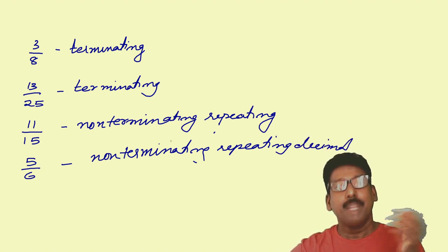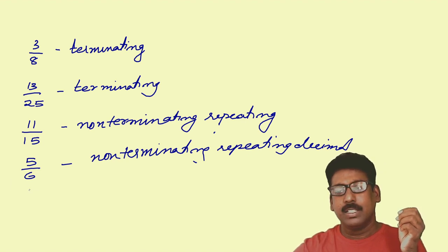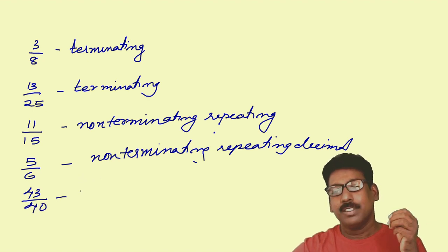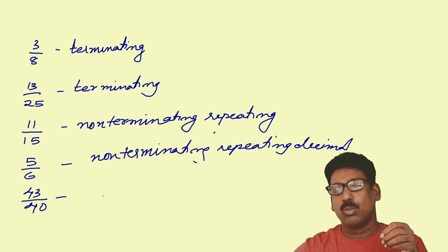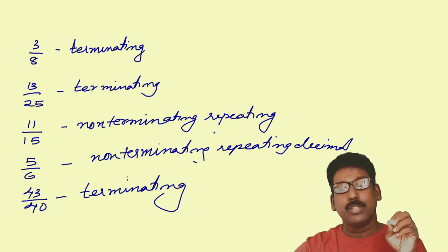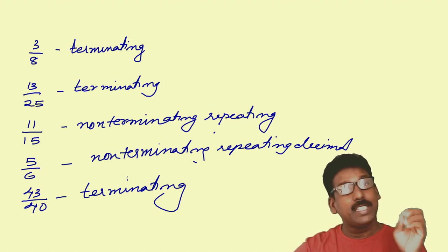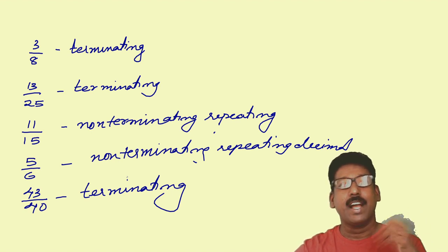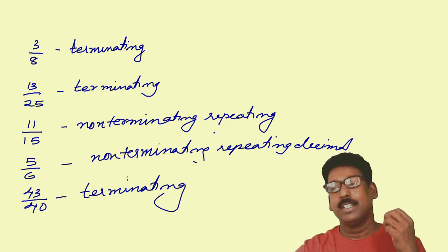Let me take one more example: 43 by 40. What about this? This rational number also has terminating decimal expansion. So 3 by 8, 13 by 25, and 43 by 40 have terminating decimal expansion, whereas 11 by 15 and 5 by 6 have non-terminating repeating decimal.